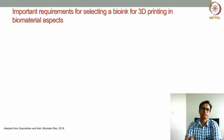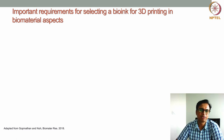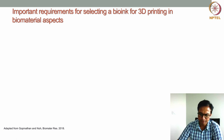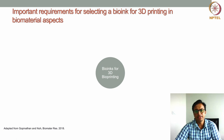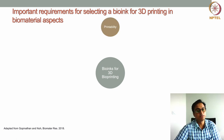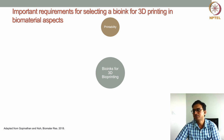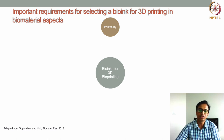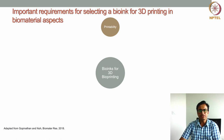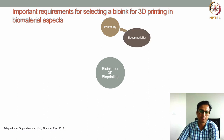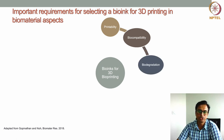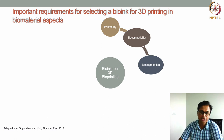Now let us understand the important requirements for selecting a bioink for 3D bioprinting. The very first requirement is printability — the material should be able to flow during the printing process and after extrusion and deposition should start to solidify. The second requirement is biocompatibility — the material should be biocompatible. The third is biodegradation — the material should be degradable under physiological conditions, and the degradation products should not be toxic to the cells, i.e., both the material and its degradation products should be non-cytotoxic.